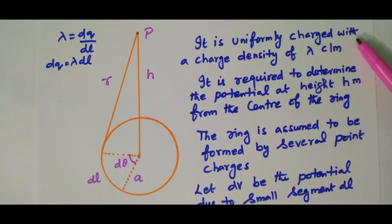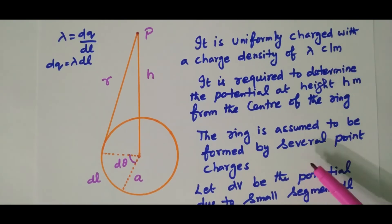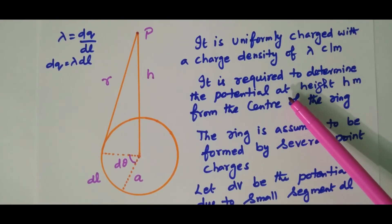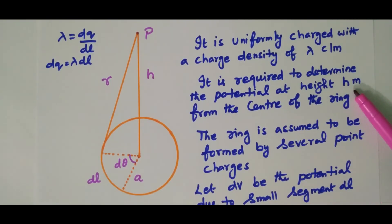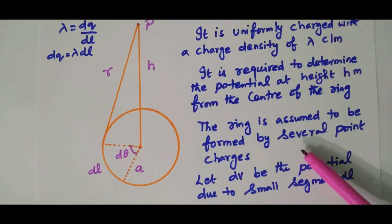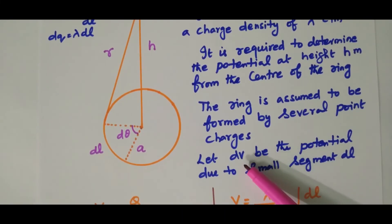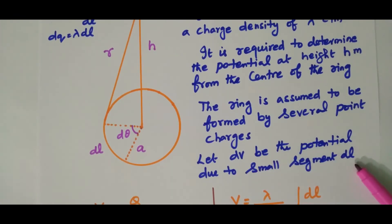The ring is uniformly charged with a charge density of lambda coulomb per meter. Since we have a lengthy wire, it is lambda coulomb per meter. Our aim is to find the potential at point P, which is at a height of h meters from the center of the ring. The ring is assumed to be having several point charges. Now we consider dV, the small potential due to the small segment dl.